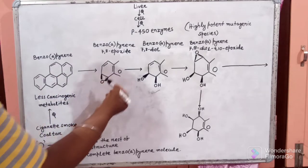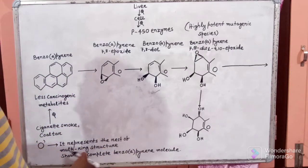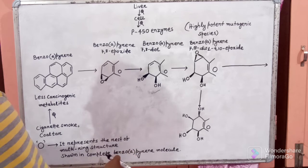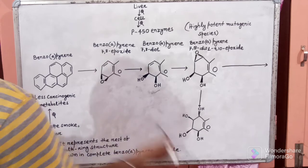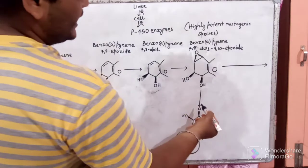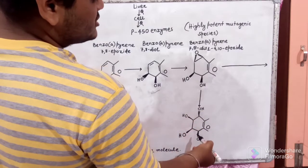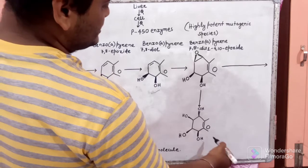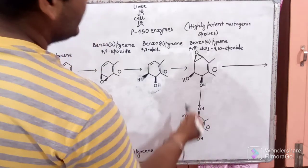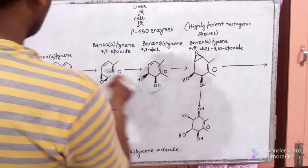The large O represents the rest of the multi-ring structure shown in the complete Benzo A Pyrene molecule. The vertical arrow indicates the changes in the direction of reduced toxicity — meaning this compound is less toxic than these four compounds.